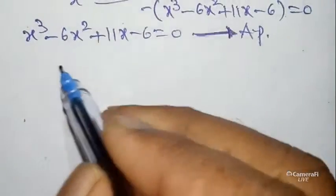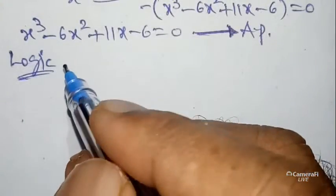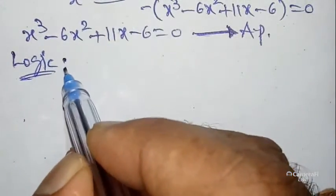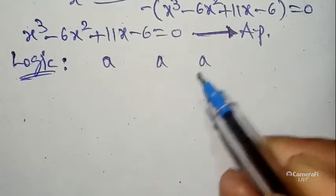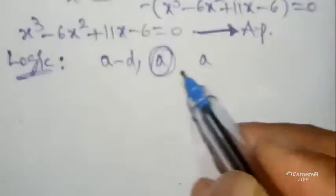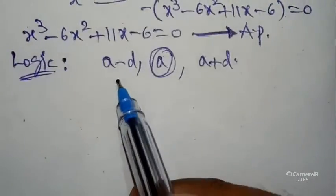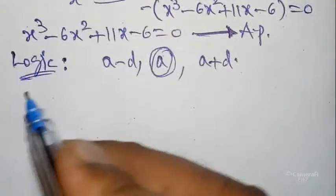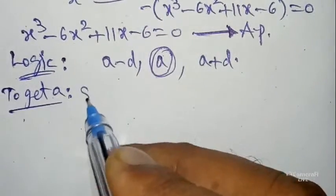After getting the Arithmetic Progression equation, you can apply my logic. I have uploaded 6 AP-related questions on our YouTube channel — please go and verify. My logic: the highest degree is 3, so take three terms. The middle term is 'a' — don't disturb. Left side of a takes (a minus d), right side takes (a plus d). So the AP equation roots are written as: a minus d, a, a plus d.